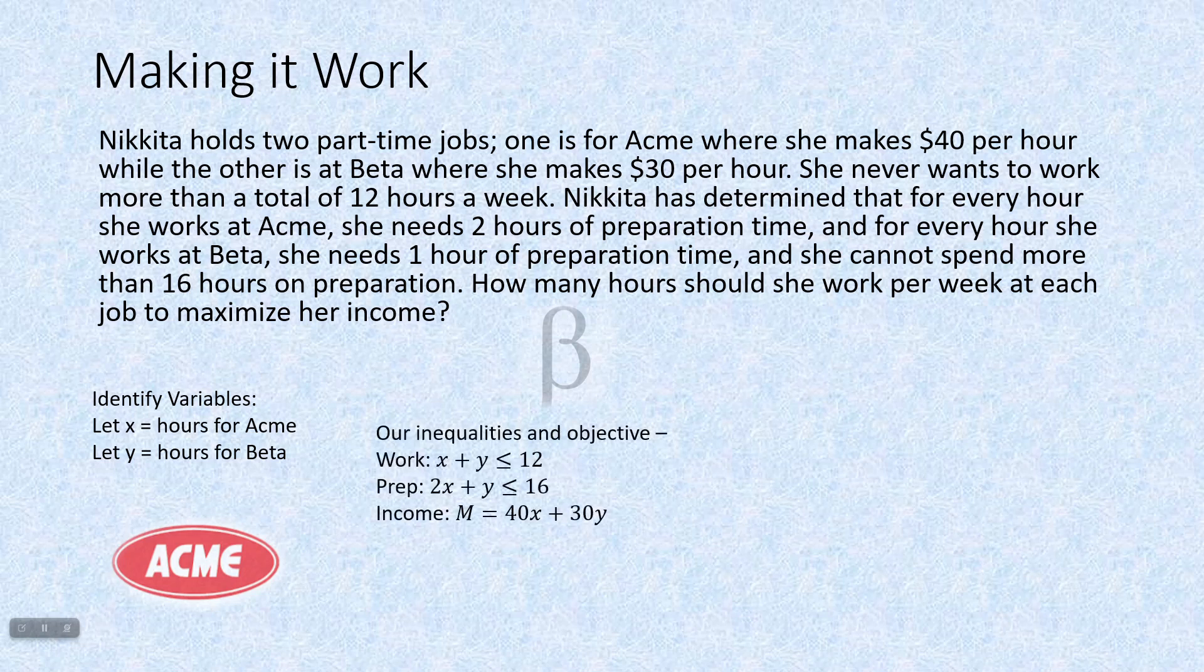Now our inequalities will be the amount that she works. Number of hours for Acme plus the number of hours for Beta has to be no more than 12. No more than means less than or equal to. Now there's a lot of different ways that we could describe this relationship that's not just the words less than or equal to. No more than, fewer than, look for words like that to kind of clue you in that there's an inequality. For preparation, it takes two hours for every hour of work at Acme of preparation, and it takes one hour for every hour of work at Beta, and the preparation time has to be no more than 16. And income, it's all about the money. That's 40x plus 30y.